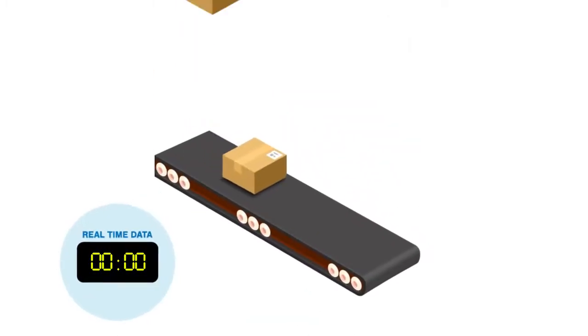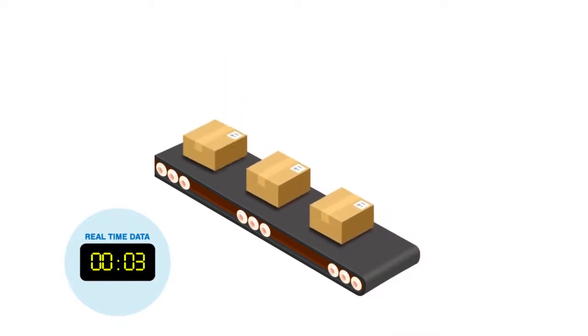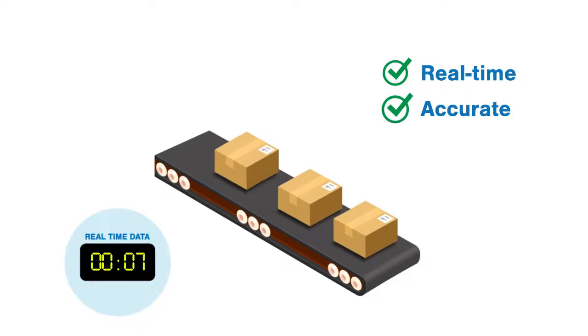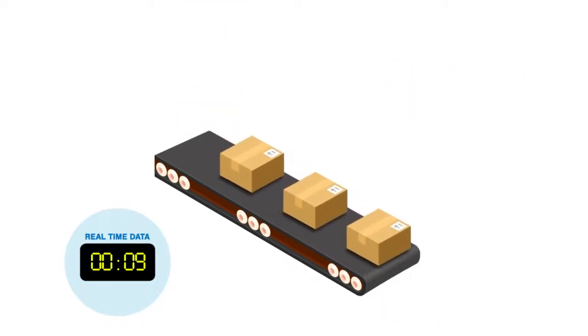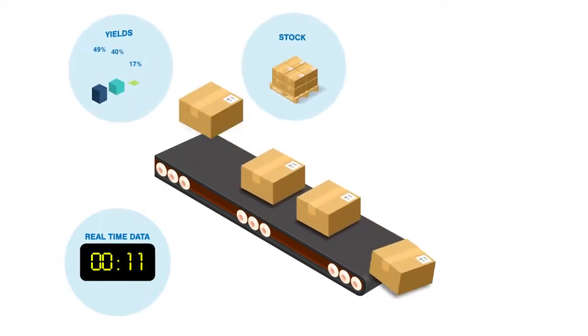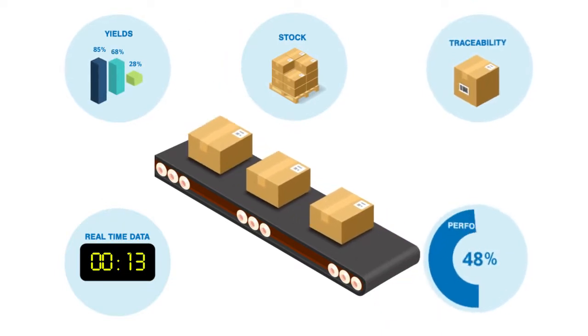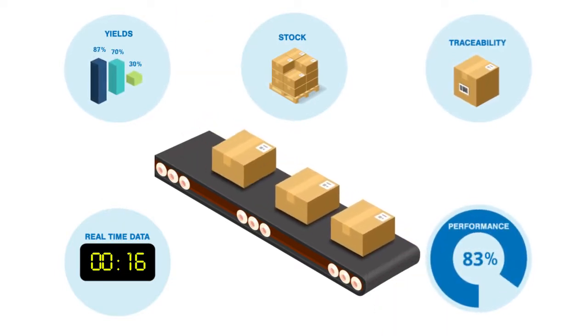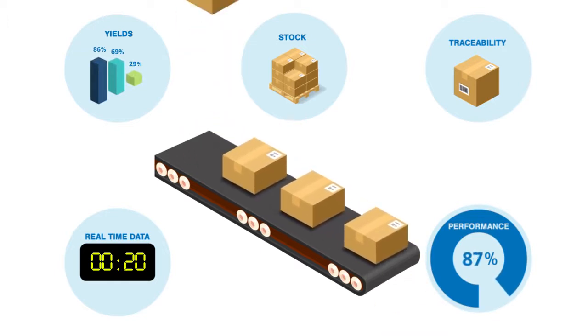Once it's up and running, your Emidex system will capture production data from the factory floor and generate real-time accurate reports, enabling you to analyze yields, stocks, traceability and factory performance instantly, so you can control efficiencies and quickly identify and deal with any issues arising on the shop floor.